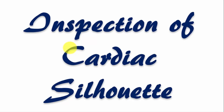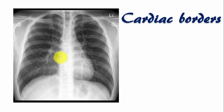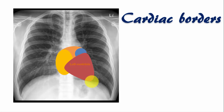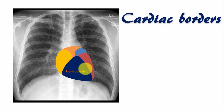After inspecting the lung fields, inspect the cardiac silhouette. The posteriormost part of the heart is formed by the left atrium. Usually the left atrium doesn't form any borders in the chest X-ray, but a small part called the left atrial appendage or left auricle forms a little of the left border. The right atrium fully forms the right border of the heart. The majority of the left border is formed by the left ventricle, with a small part by the left auricle.